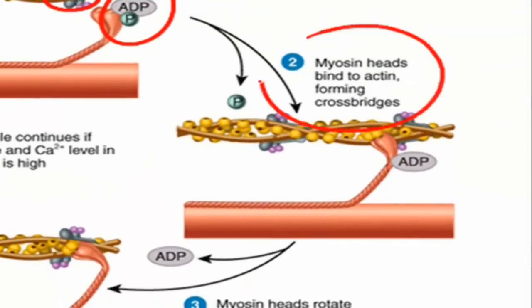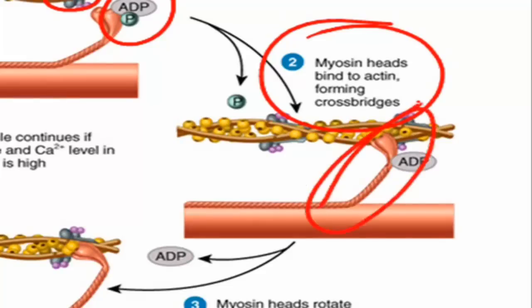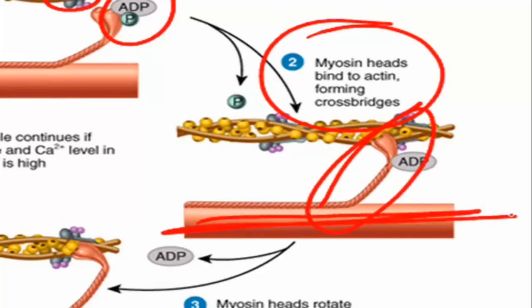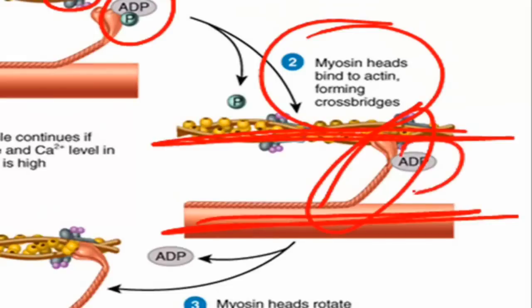Then the myosin heads grab the actin. They bind to the binding sites on the actin, forming what's called a cross bridge — a bridge between the thick filament and the thin filament. The ADP is still bound at this point.